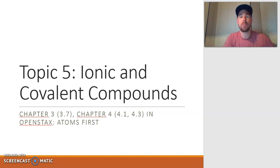Topic 5 talks about the two main types of compounds, which are covalent and ionic. In the first part of this topic, we'll take a close look at ionic compounds and then we'll transition into covalent. We're also going to take a look at acids and how we name and write those formulas.